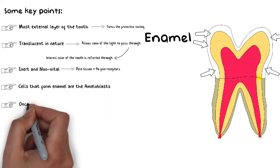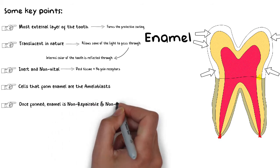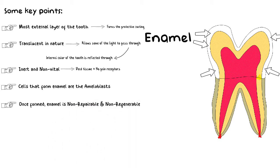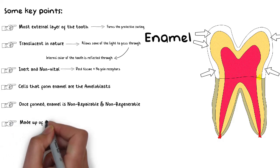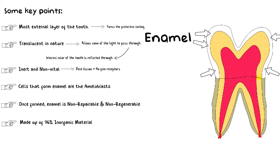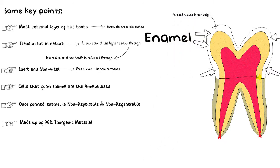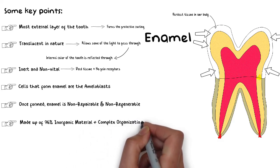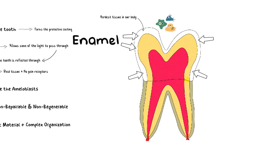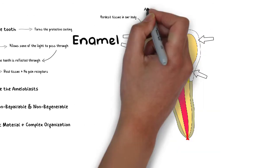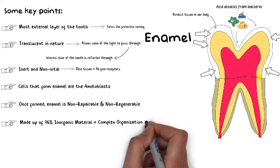The cells responsible for forming enamel are known as ameloblasts. Once the enamel is formed, it is non-regeneratable and non-repairable — meaning if it is destroyed by any means, like a caries attack or cavity preparation, it can never be replaced. However, enamel is not vulnerable because it is one of the most highly mineralized tissues in our body, containing up to 96% inorganic material, making it even harder than our bones. The remaining 4% is organic material and water.